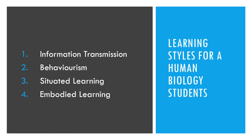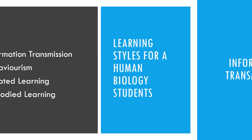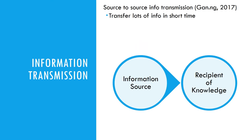These are the learning styles we will be focusing on for human biology students. Information transmission involves passing information from one source of fixed knowledge to another source thought of as an empty vessel with no prior knowledge. It is fast-suited to human biology study, where there is lots of content to remember and not enough time to collaborate and create knowledge on our own.